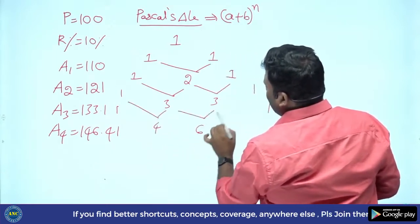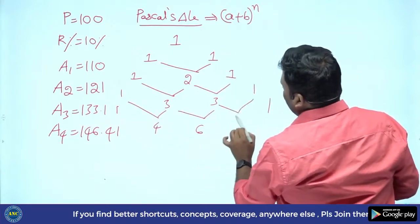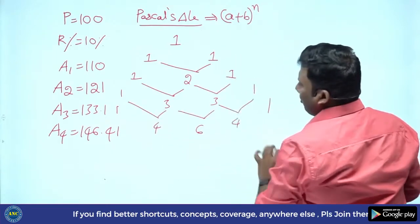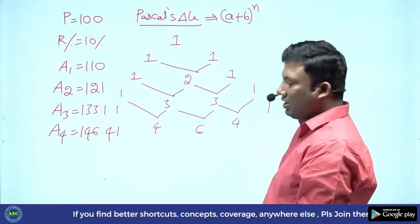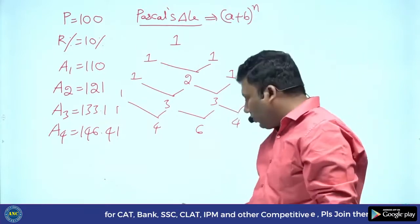And 2 plus 1 equals 3. Write 1 on the leftmost and 1 on the rightmost. In between: 1 plus 3 equals 4, 3 plus 3 equals 6, 3 plus 1 equals 4. So the row is: 1, 4, 6, 4, 1.